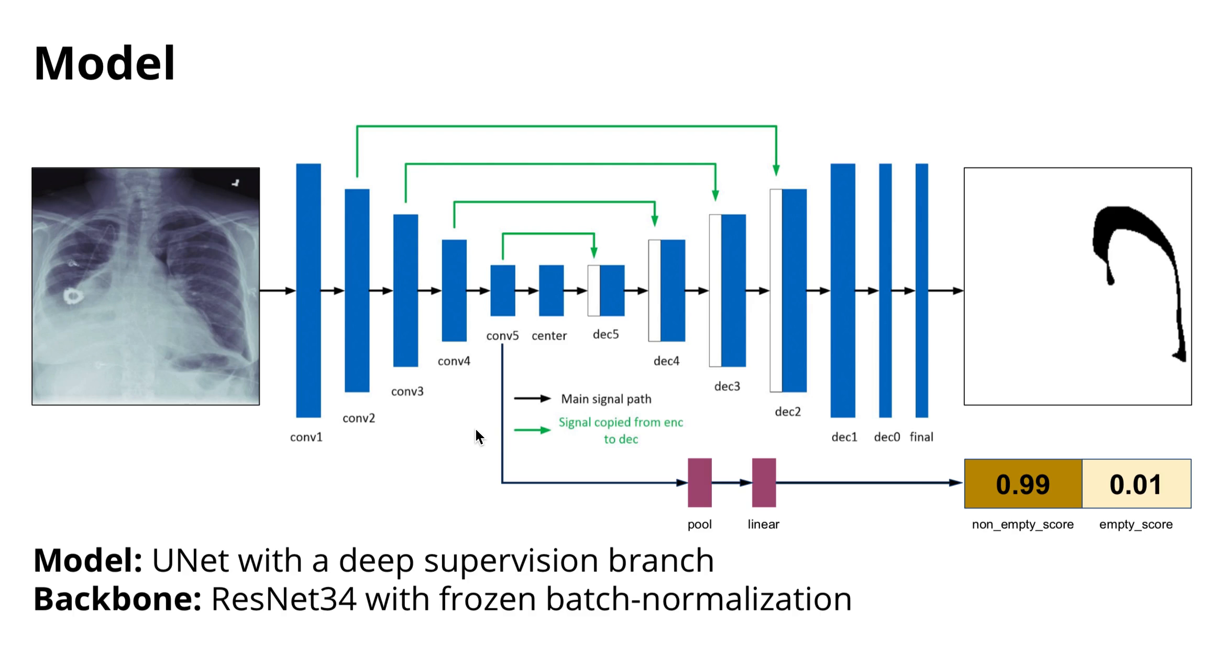As a backbone, I used the ResNet 34 architecture with frozen batch normalization. On validation, this worked better.